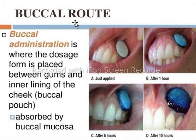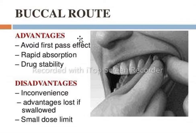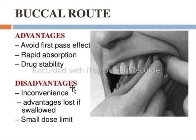Next, we have the buccal route of drug administration, where the dosage form of the drug is placed between the gums and the inner lining of the cheeks and absorbed by the buccal mucosa. The advantages of this route are that first pass effects are not involved, and it also provides rapid absorption and drug stability. The disadvantages include inconvenience or unacceptability to the patient, a chance of salivation, and a small dose limit.